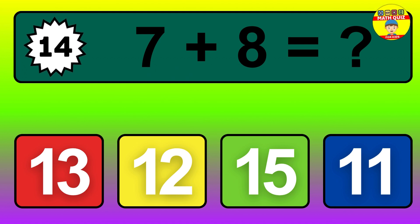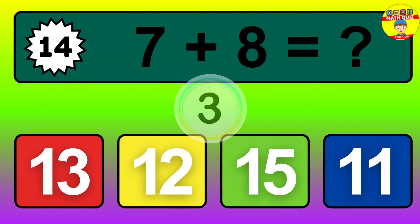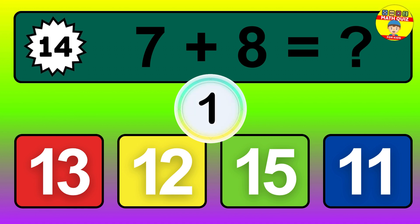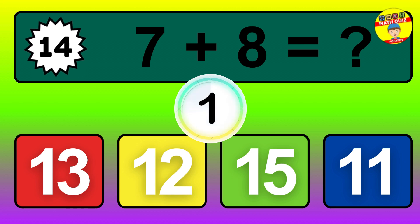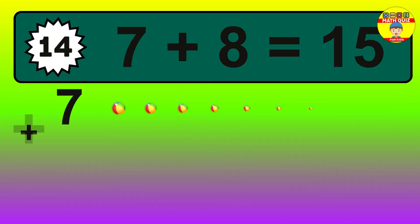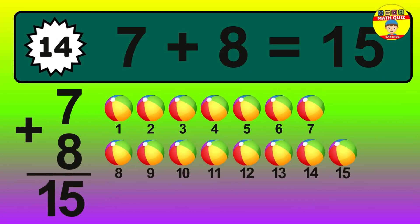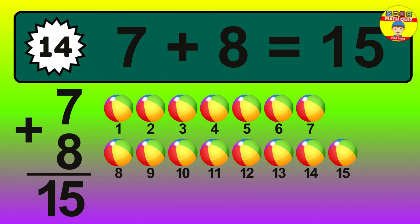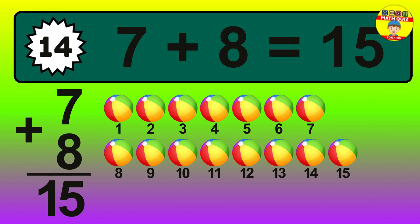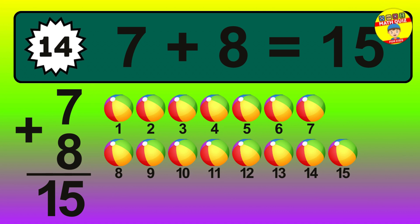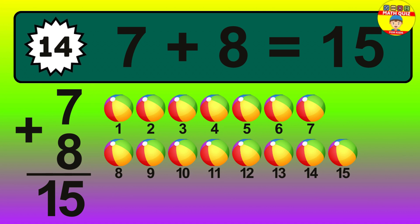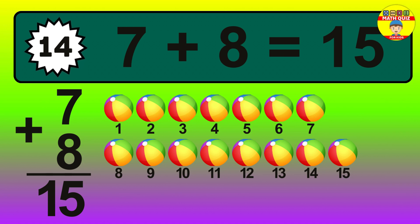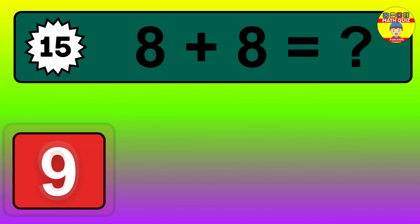Question 14. 7 plus 8 equals what? So the answer is 7 plus 8 is 15. Let's count it. 1, 2, 3, 4, 5, 6, 7, 8, 9, 10, 11, 12, 13, 14, 15.